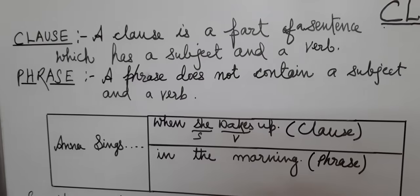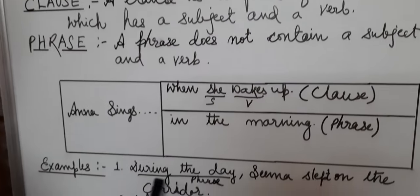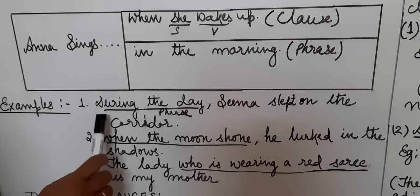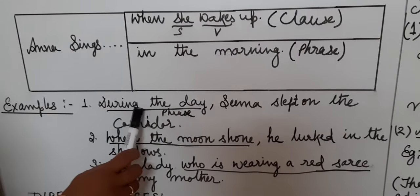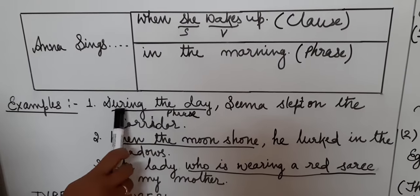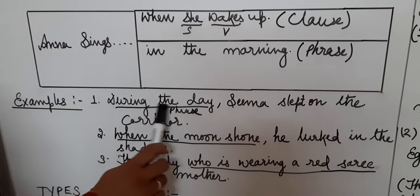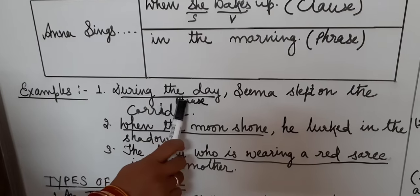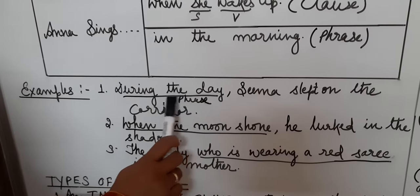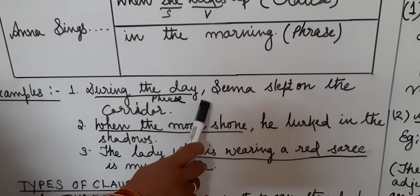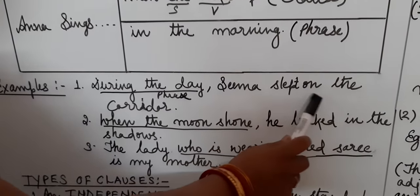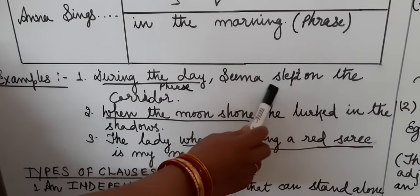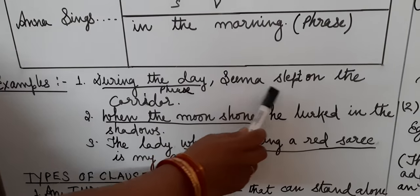Now see the examples of clauses. 'During the day, Sima slept on the corridor.' Here 'during the day' — is mein koi subject nahi hai, verb nahi hai. It is just two or three words, so it is a phrase because it doesn't consist of a subject and a verb. 'Sima slept on the corridor' — Sima is a subject and slept is a verb, so it is a clause.